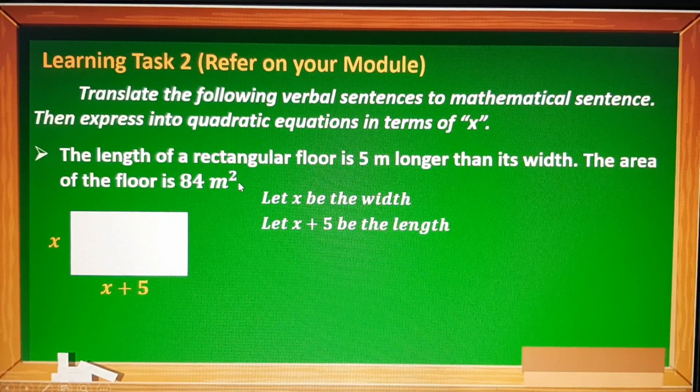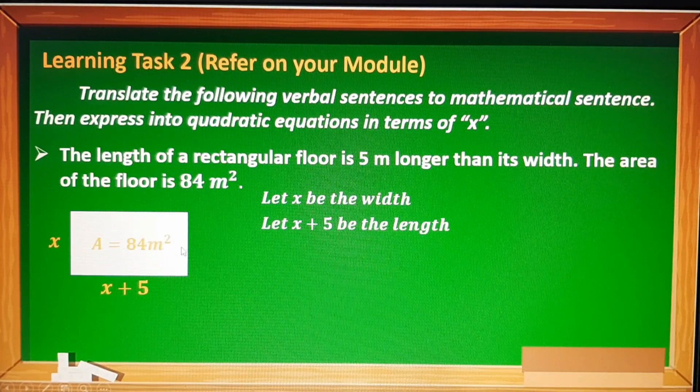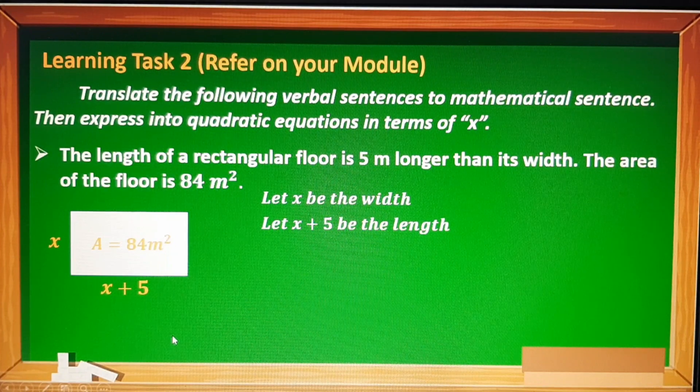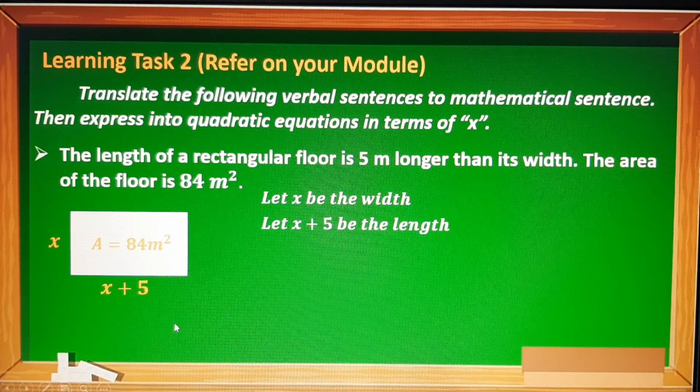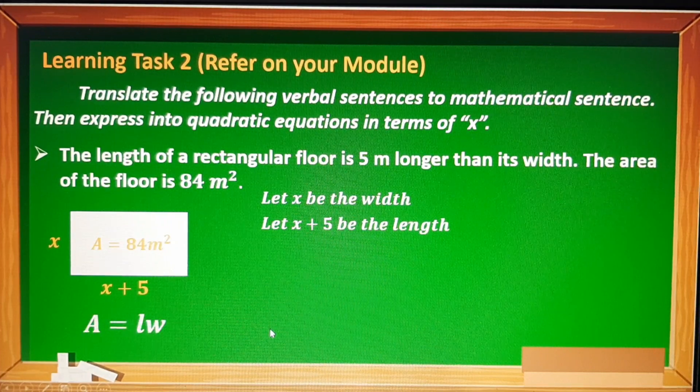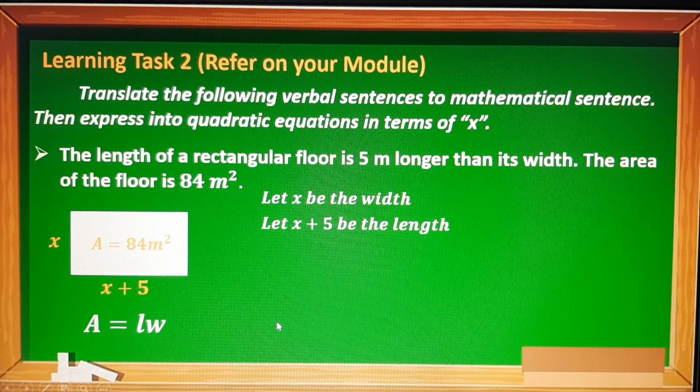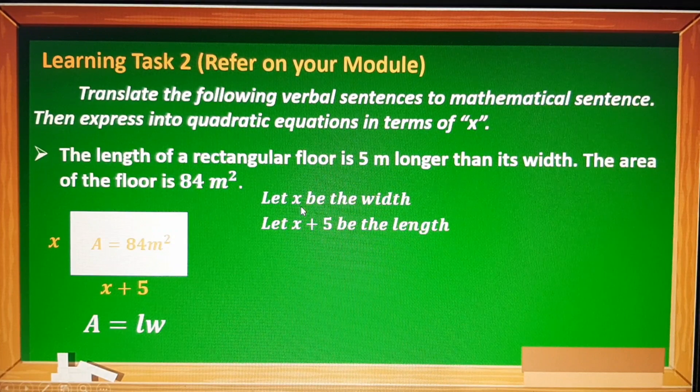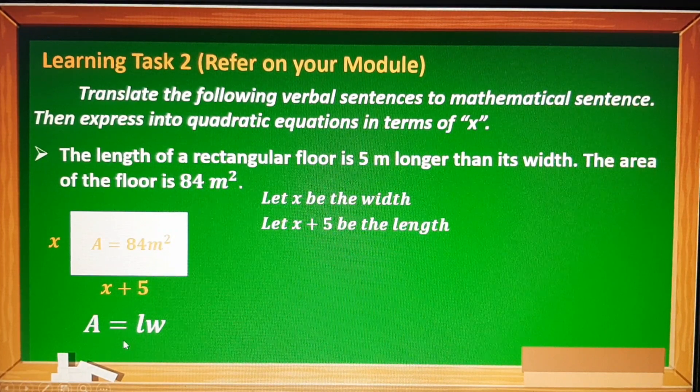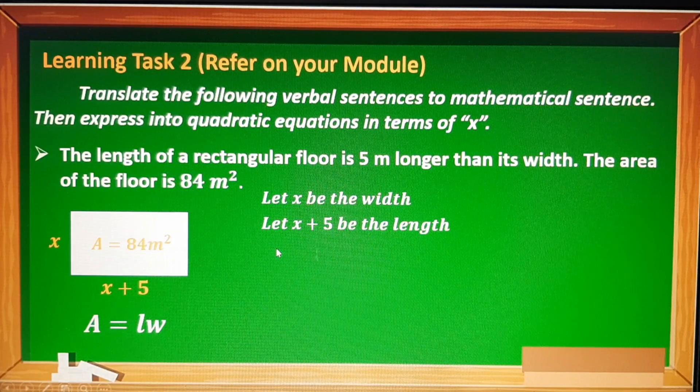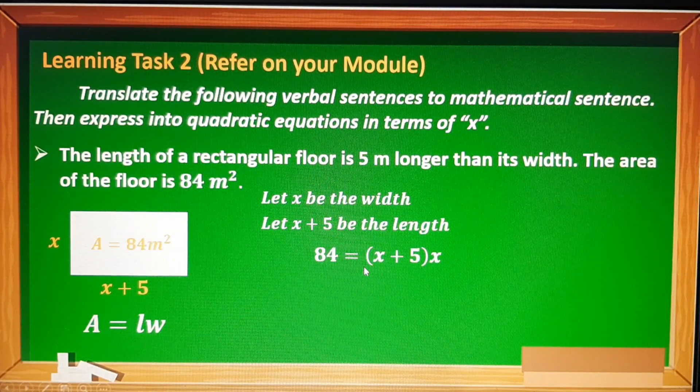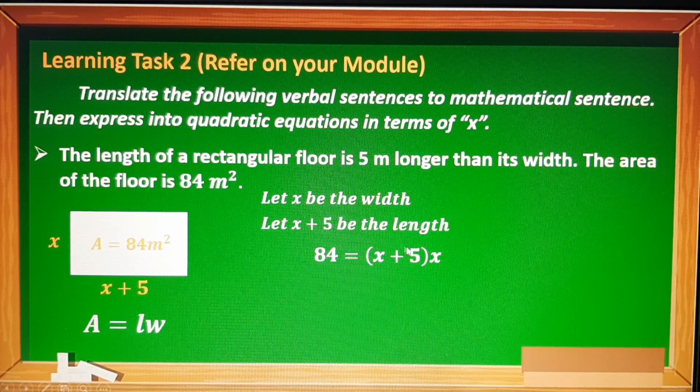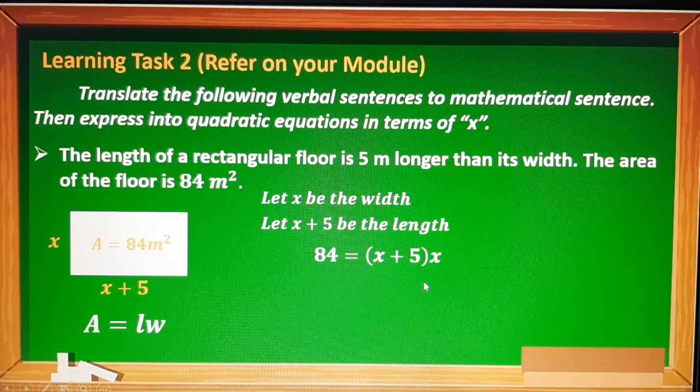According dito sa problem, ang area ng rectangle ay 84 meters squared. Since we're talking about length, width, and area, let us identify the formula of area. So the formula of area is equal to length times width. Now, let's apply this to our representations wherein your width is x and your length is x + 5. So the area is 84 equals length times width, so 84 = (x + 5) times x para sa width. At ito yung equation natin.